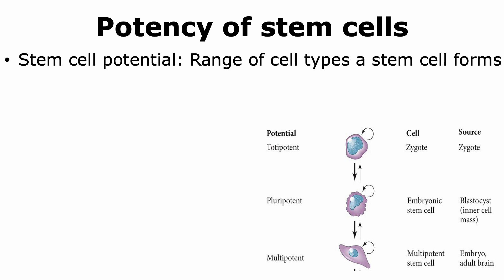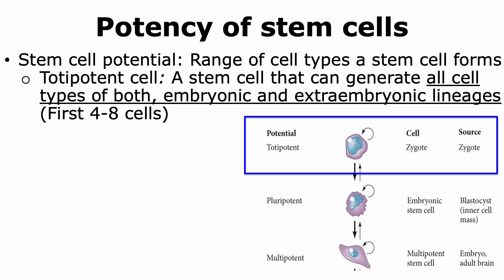We're now going to look at the different types of stem cells based on their potency. The stem cell potential is the range of cell types a stem cell can produce. The first type is a totipotent cell. A totipotent stem cell can generate all cell types of both the embryonic and extraembryonic lineages. The cell shown to be totipotent is a zygote, because it has the ability to give rise to embryonic as well as extraembryonic cells. When the zygote undergoes cell division in the cleavage step of development, the cells up until the 4 to 8 cell stage are also totipotent.